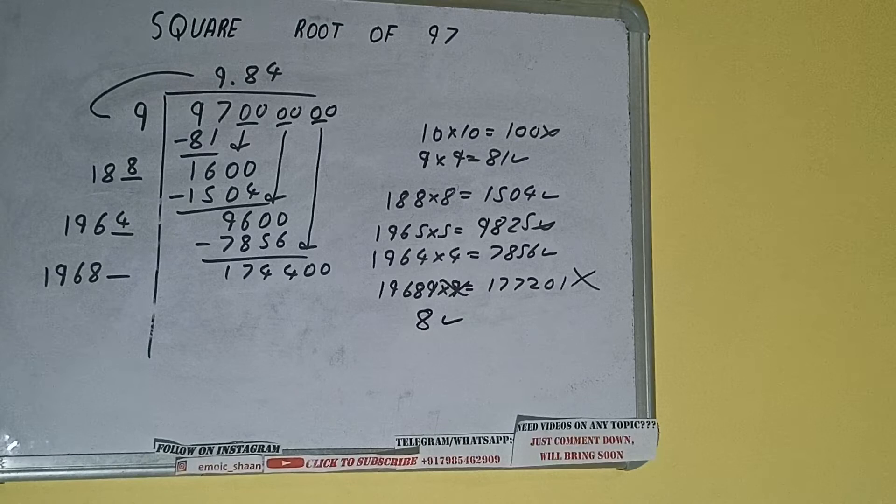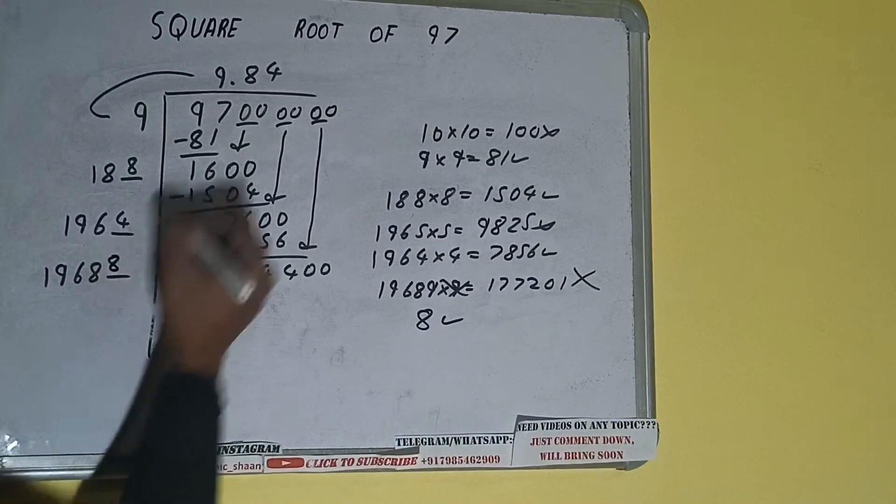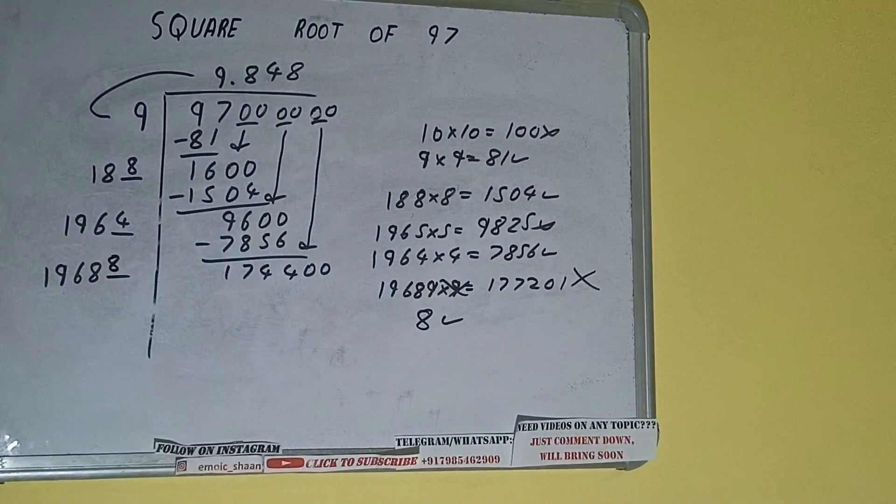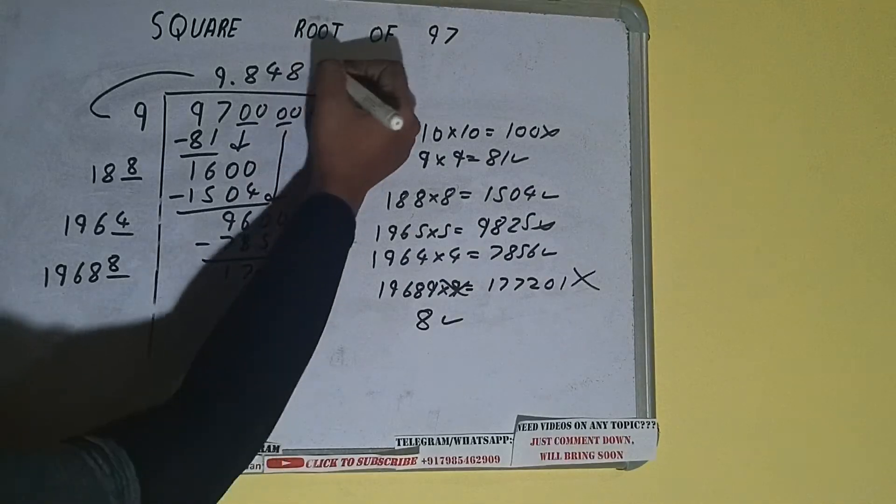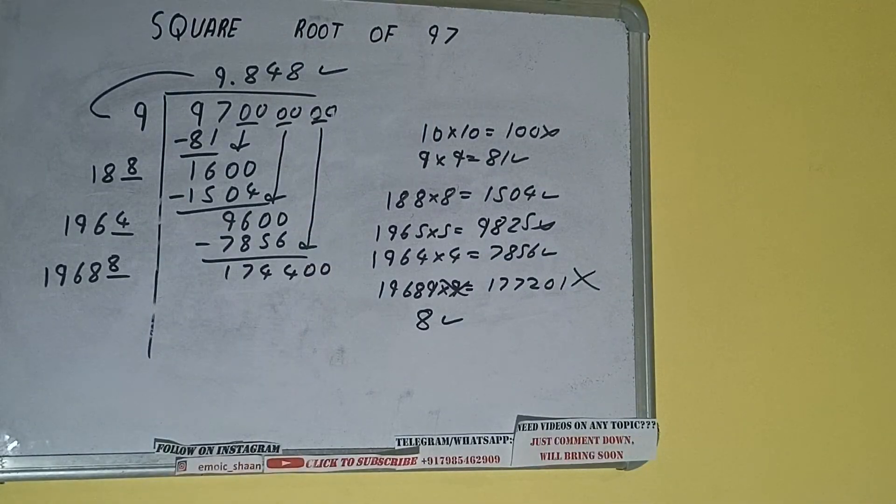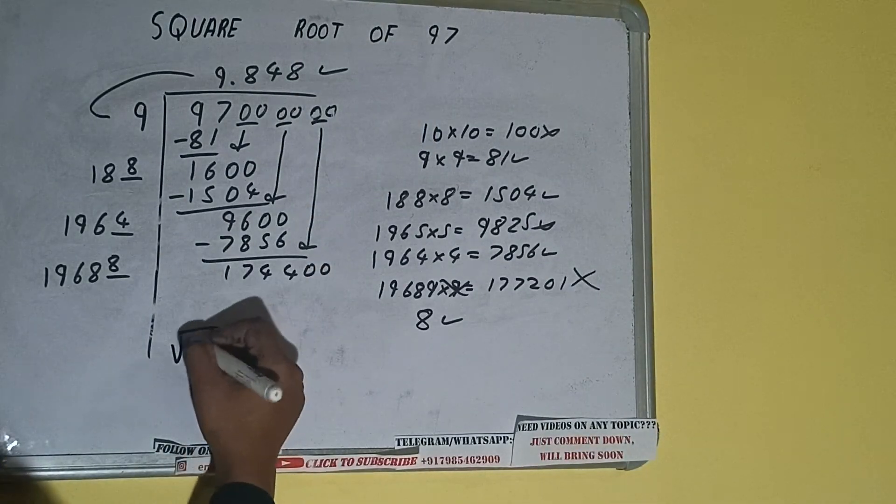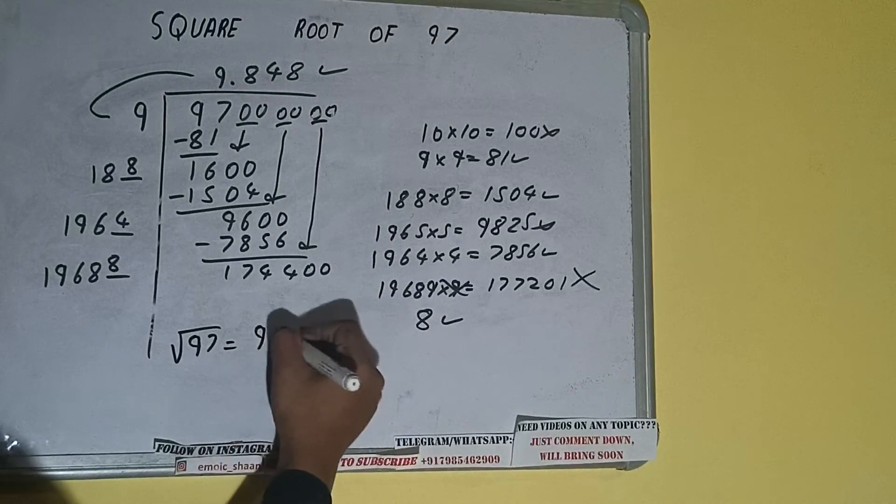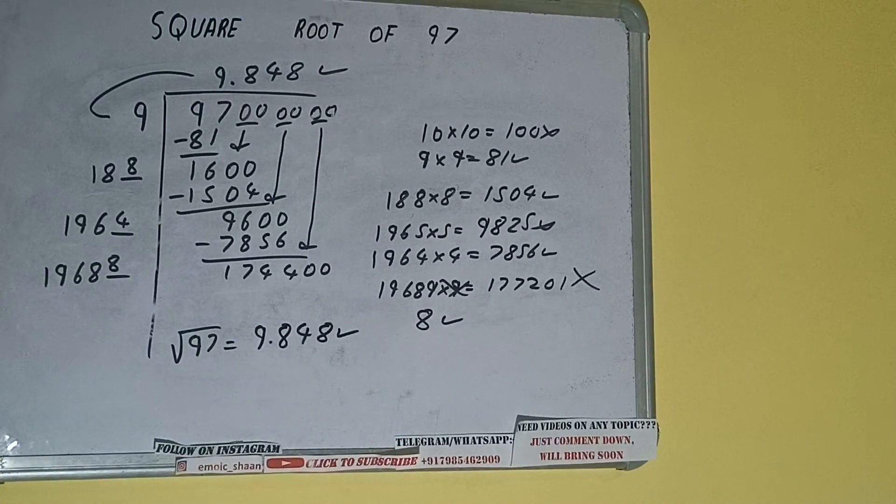But with this we can understand that 8 will surely work. So 8 here and 8 here, but we don't need to calculate because we got the answer correct up to three decimal places. So square root of 97 will be 9.848. That will be the answer.